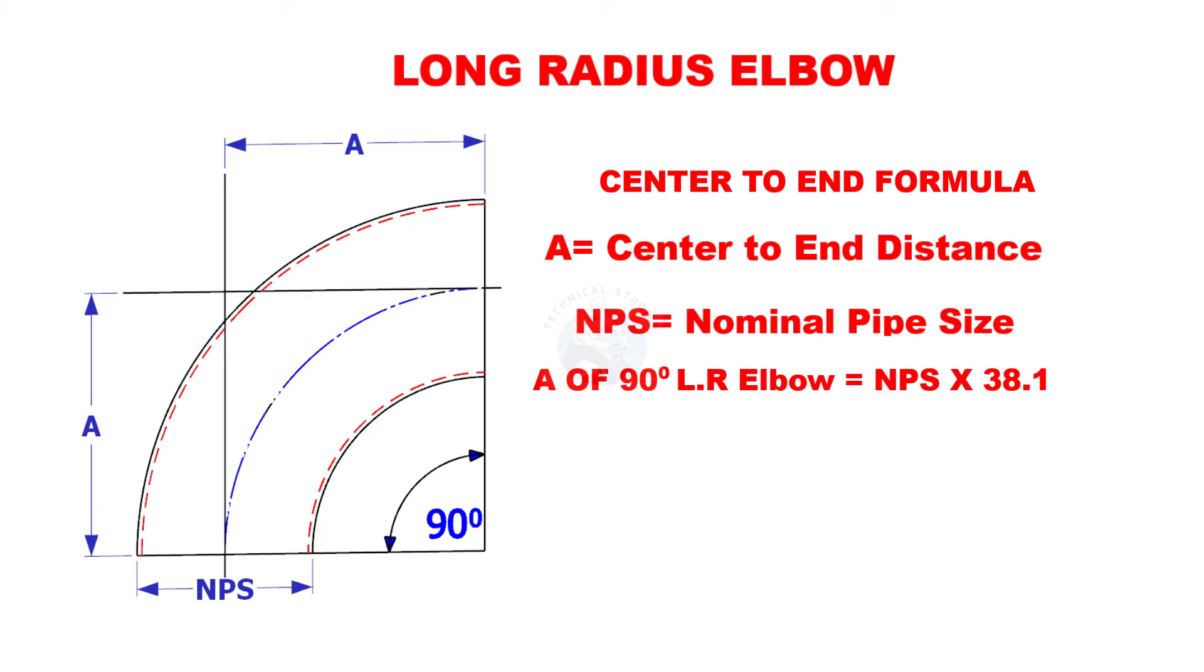A of a 90 degree long radius elbow is nominal pipe size multiplied by 38.1. Here 38.1 is a constant.